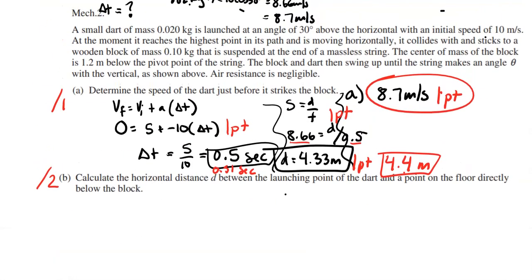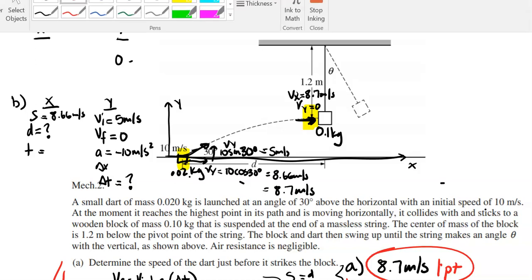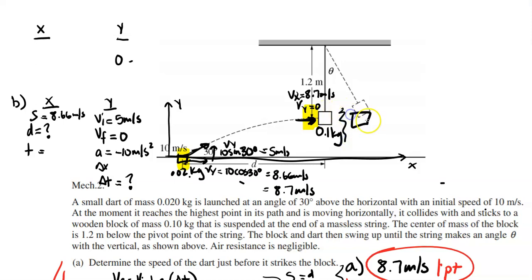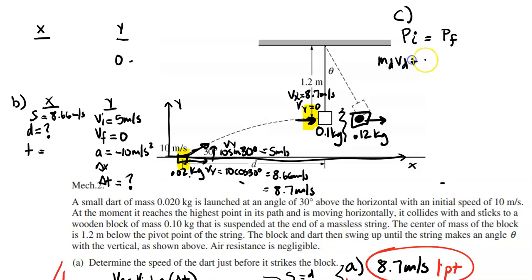For part C, we find the speed of the block just after the dart strikes it. I draw before and after diagrams — afterwards the dart and block are stuck together moving at velocity V_both. The dart mass is 0.02 kg at 8.66 m/s, the block mass is 0.1 kg initially at rest. Using conservation of momentum: momentum initial equals momentum final.